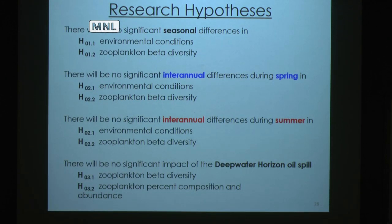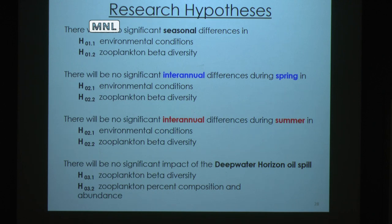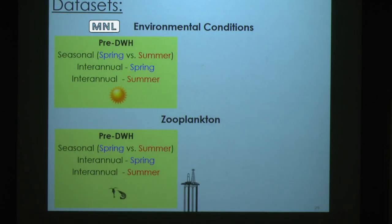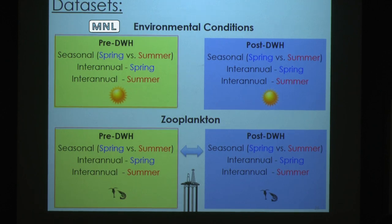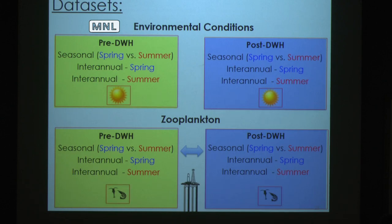I have four major classes of hypotheses and I looked at environmental and zooplankton communities separately for each. First I looked at seasonal differences between spring and summer, then I dug into each season between years — inter-annual spring and inter-annual summer. Lastly I combined the datasets to assess whether there was a significant impact of the oil spill on zooplankton beta diversity, or their percent composition and abundances between pre and post. If it has a yellow background I'm talking about pre-spill data, blue background means post-spill. In the top left corner, a sun icon means environmental conditions and a zooplankton icon means we're talking about biological communities.